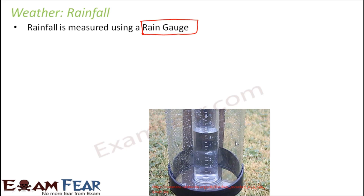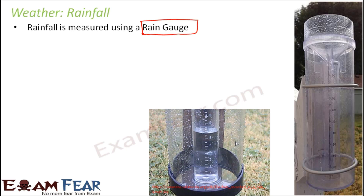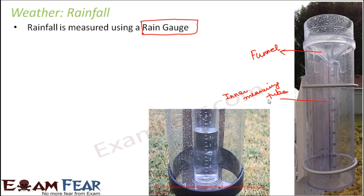There is one smaller cylinder inside a bigger cylinder. So let us look at a bigger picture of a rain gauge. There are three important parts: the first is a funnel — that funnel is the part which actually helps to collect the rain. Inside you have the inner measuring tube, which actually measures the amount of rainfall. And outside you have the outer cylinder. So these are the three important parts of a rain gauge.